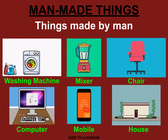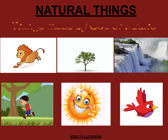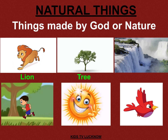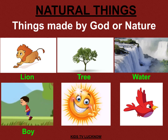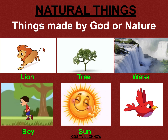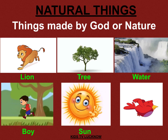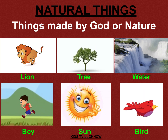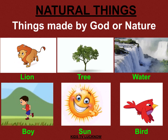Now after man-made things, let us see what are natural things. Things made by God or nature are called natural things. All those things which are present in nature and created by God are called natural things. As you can see the pictures: lion, tree, water, boy, the smiling face of the sun, and the cute bird. All these things are created by God and they are present in nature. Man cannot create all these things, so they are called natural things.